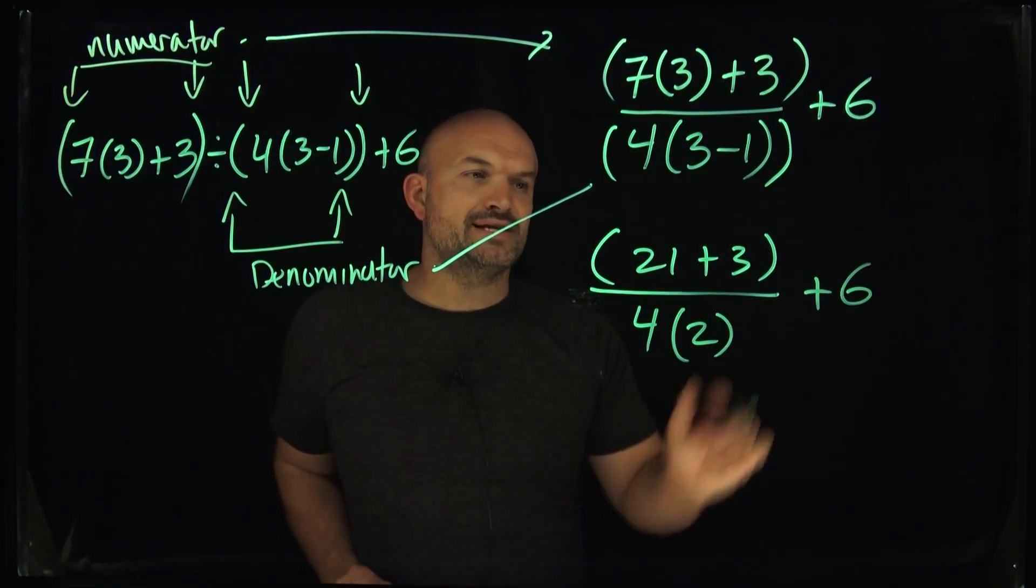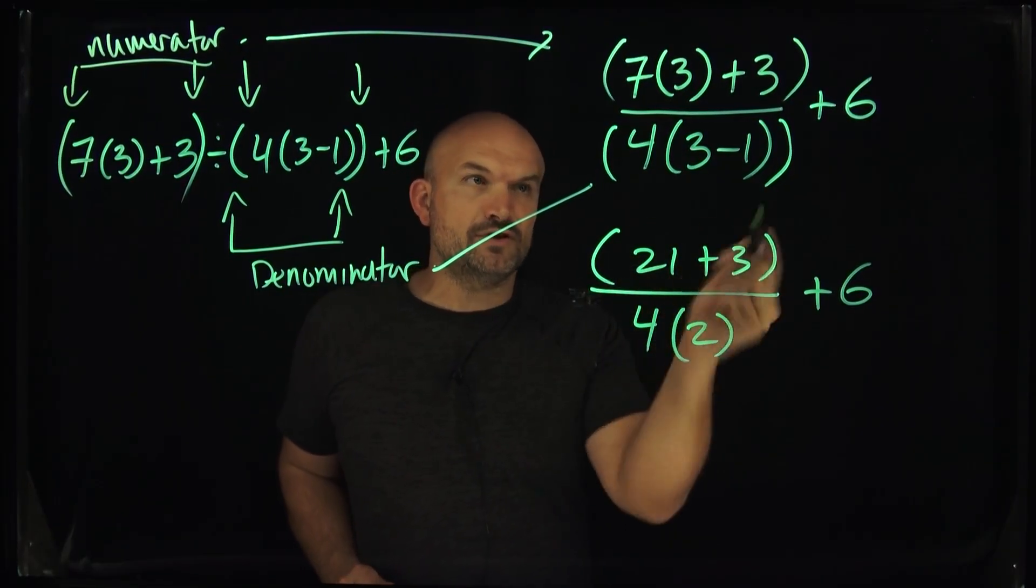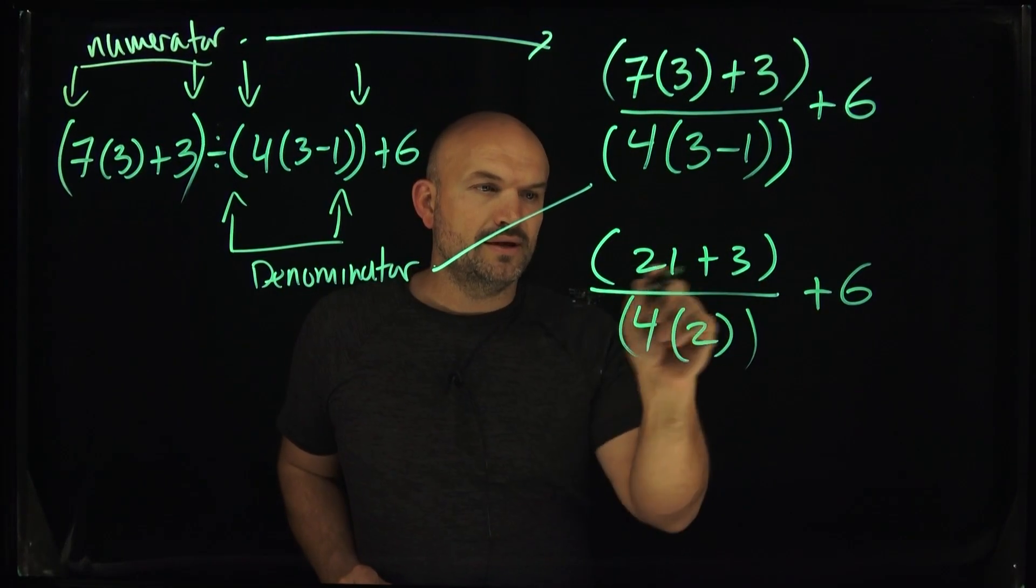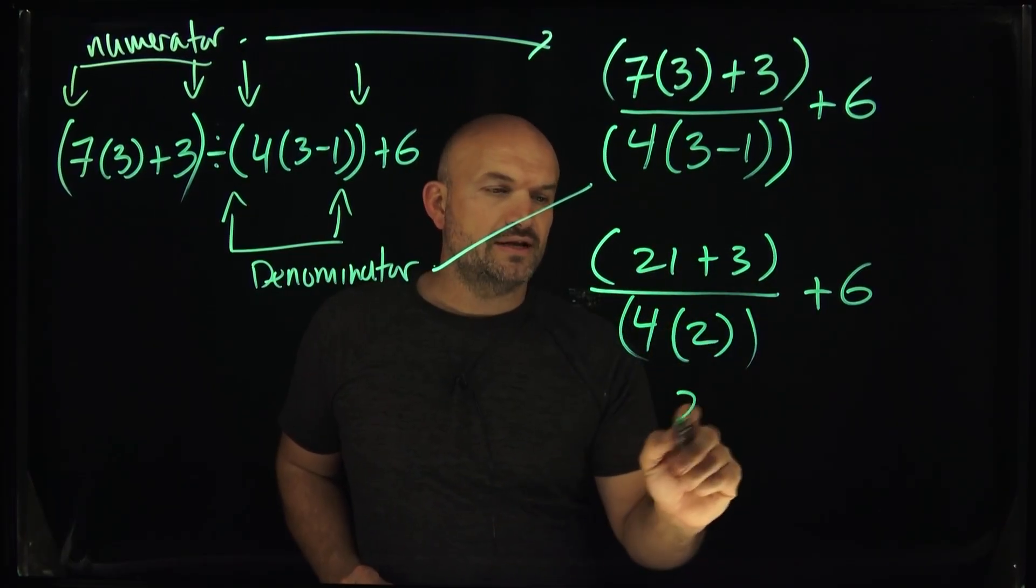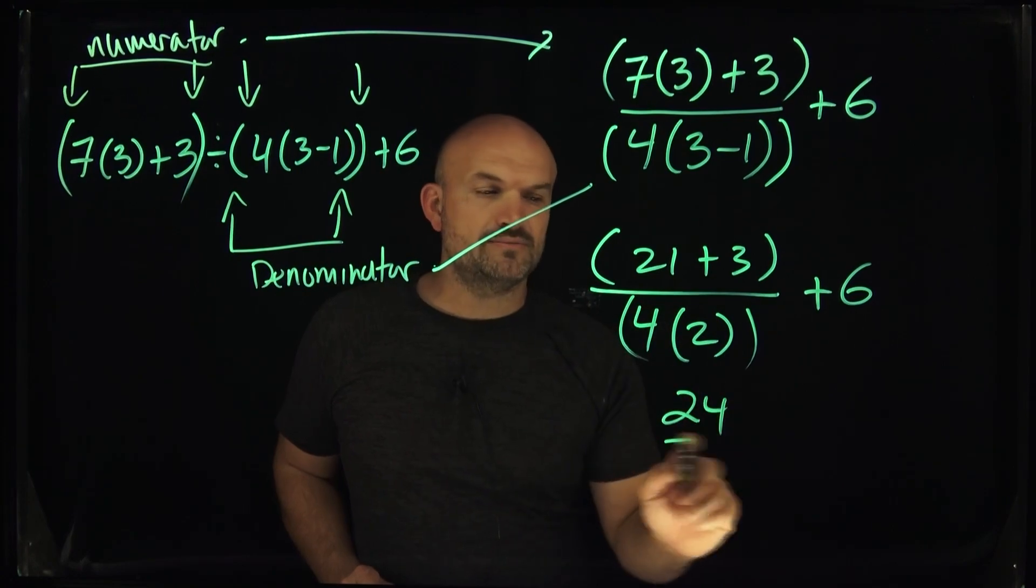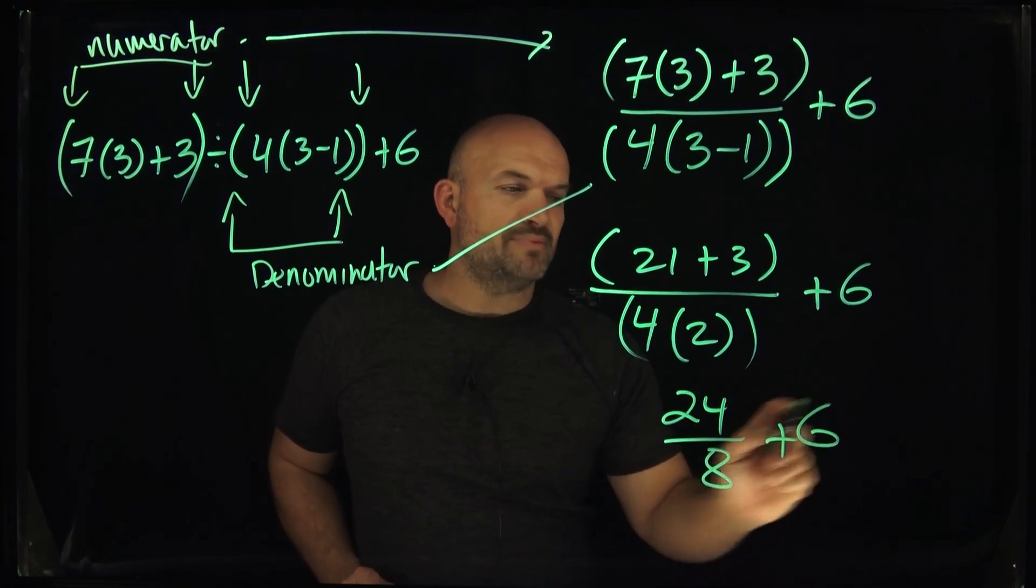Okay. So now what we simply need to do is say, all right, well, now I can simplify this, further simplify, and you can put that in parentheses as well. You don't really need to, though. Four times two is just going to be an eight, but 21 plus three is going to be a 24. Four times two is going to be an eight and plus six.